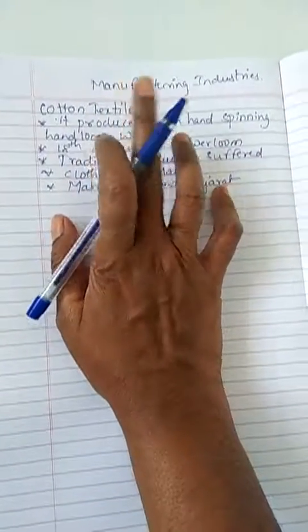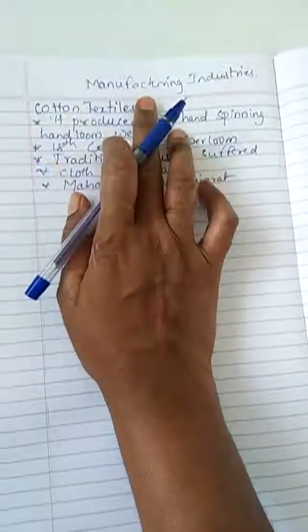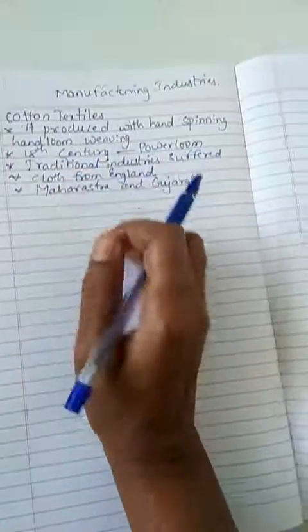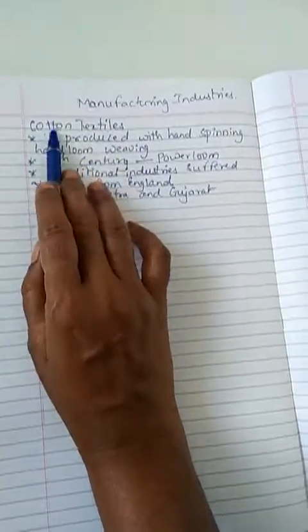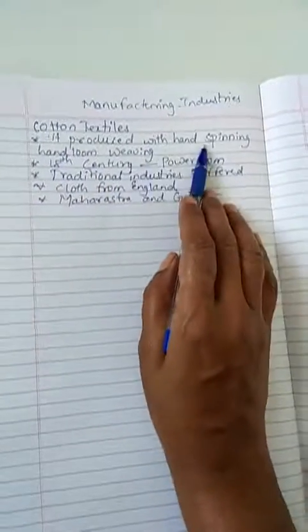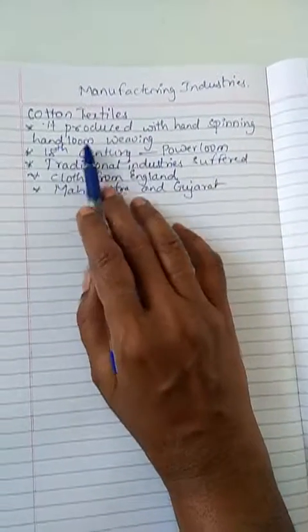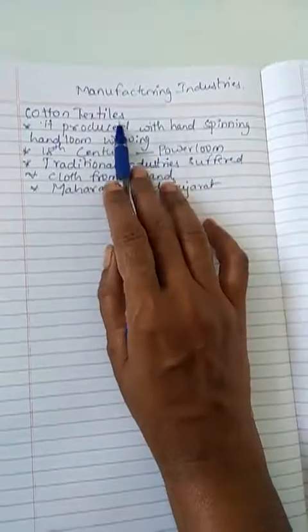Cotton industry - from ancient period, India is basically known for cotton. It was produced with hand spinning and hand loom weaving.